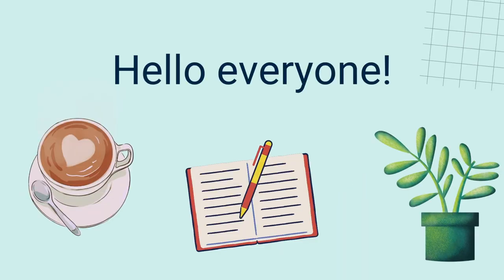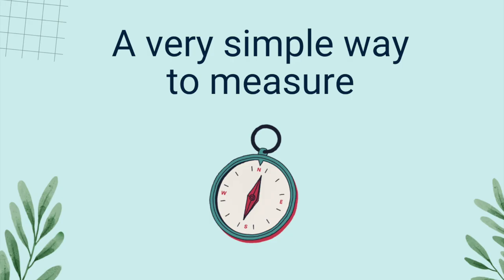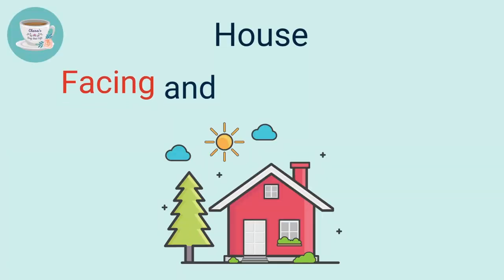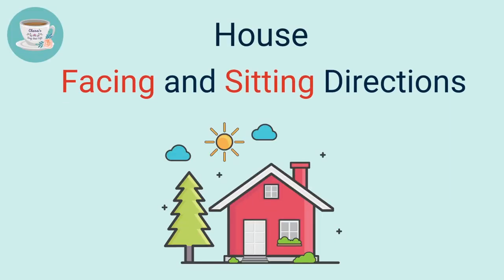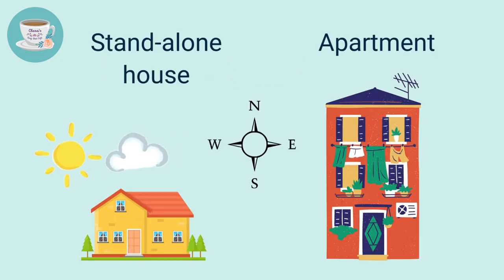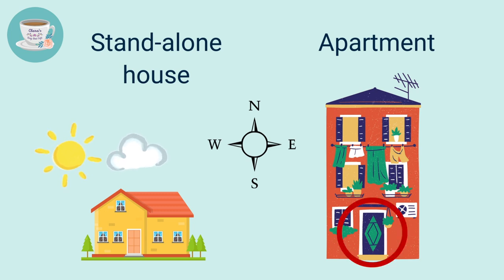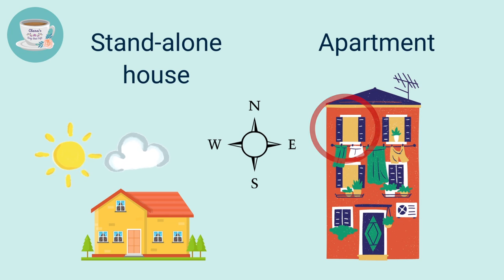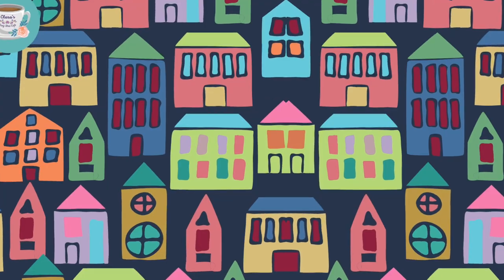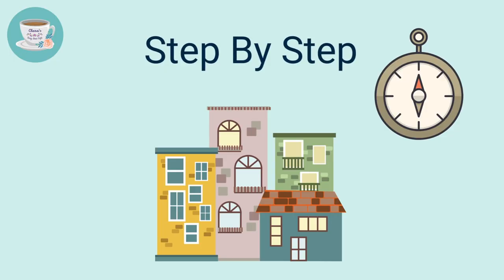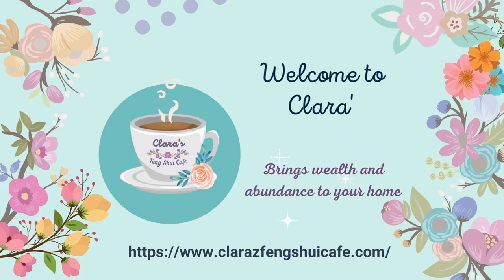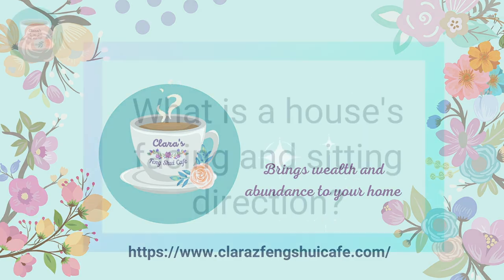Hello everyone. In this video I'm going to show you a very simple way to measure your house's facing and sitting directions. The method for measuring a standalone house and an apartment is a bit different, because for an apartment you need to measure the directions of the building as well as your unit in order to conduct a feng shui analysis. Today I'll show you how to measure both the house and apartment directions step by step.